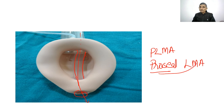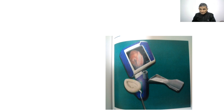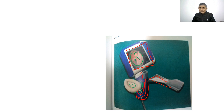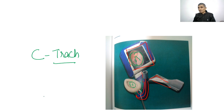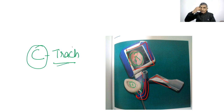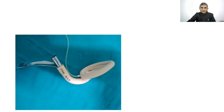Another modification of the LMA is the C-Trach. It has an anatomically curved airway tube with an integrated handle and a monitor screen connected by fiber optic wires. Structures anterior to the mask are visualized on the screen. C-Trach stands for camera — when a camera is attached to the LMA it becomes C-Trach. Under visual guidance, you can intubate and visualize the vocal cords.